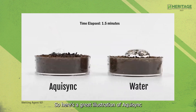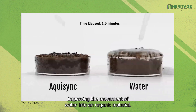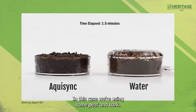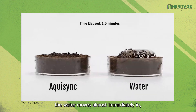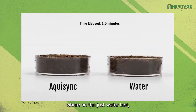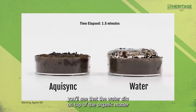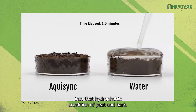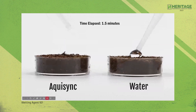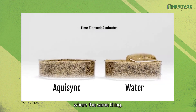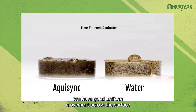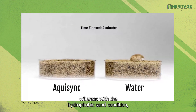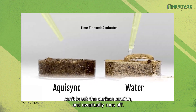Here is an illustration of Aqua Sink improving the movement of water into organic material — in this case peat and bark. With Aqua Sink, the water moves almost immediately into the material, whereas with just water, the water sits on top of the organic matter and eventually runs off. In a sand-based situation, there is good uniform movement across the surface and into the soil profile with Aqua Sink, whereas with a hydrophobic sand condition the water beads up, can't break the surface tension, and eventually runs off.